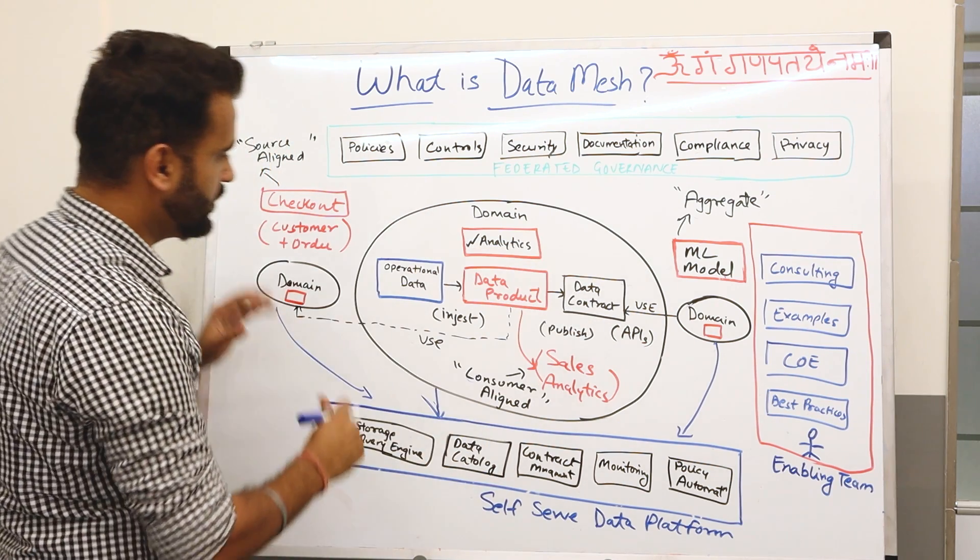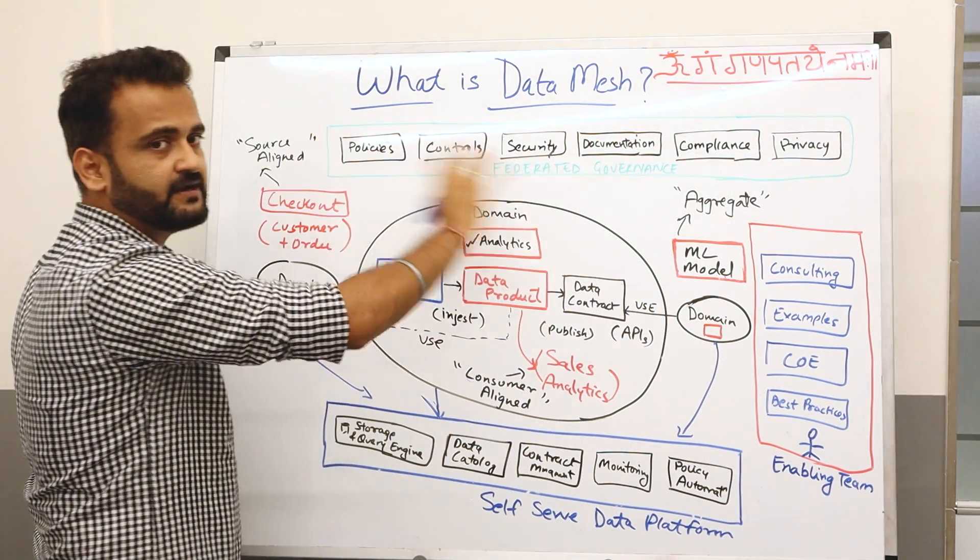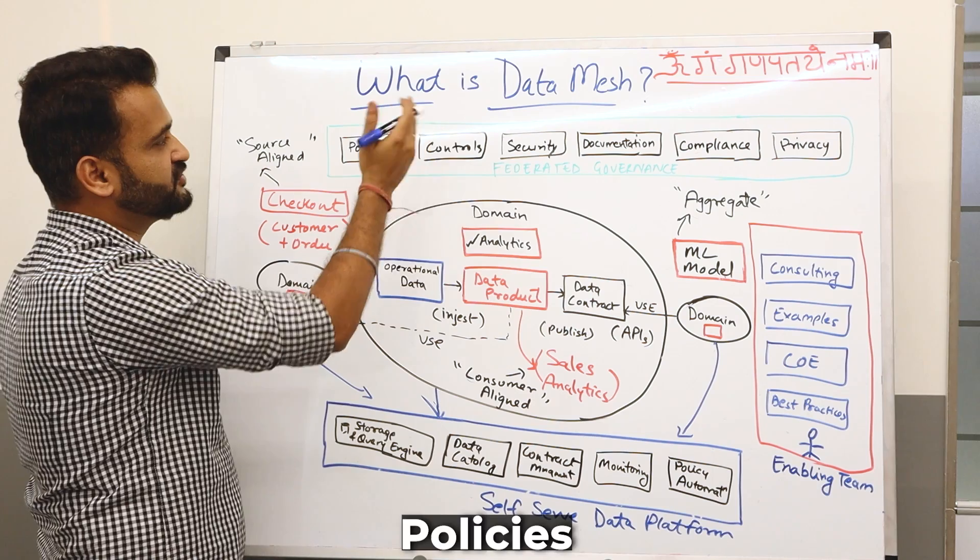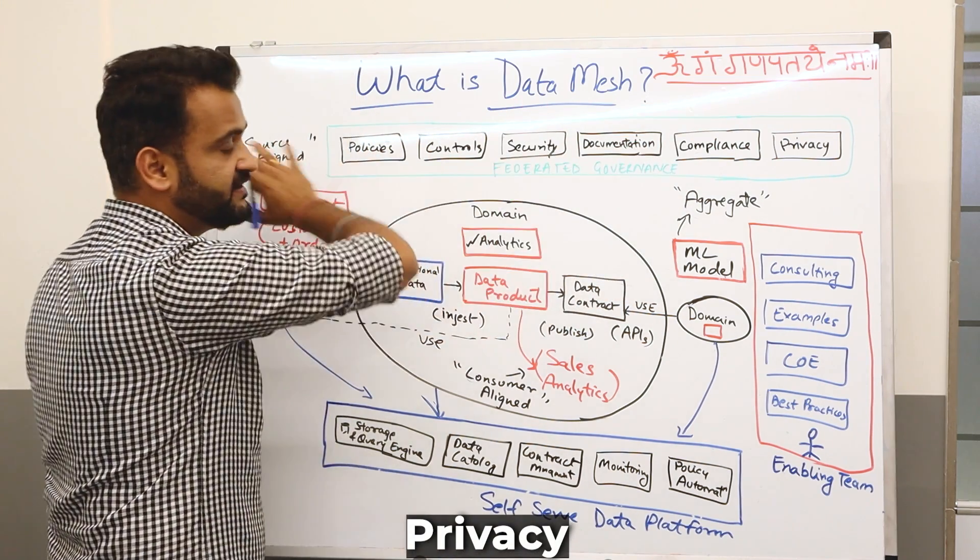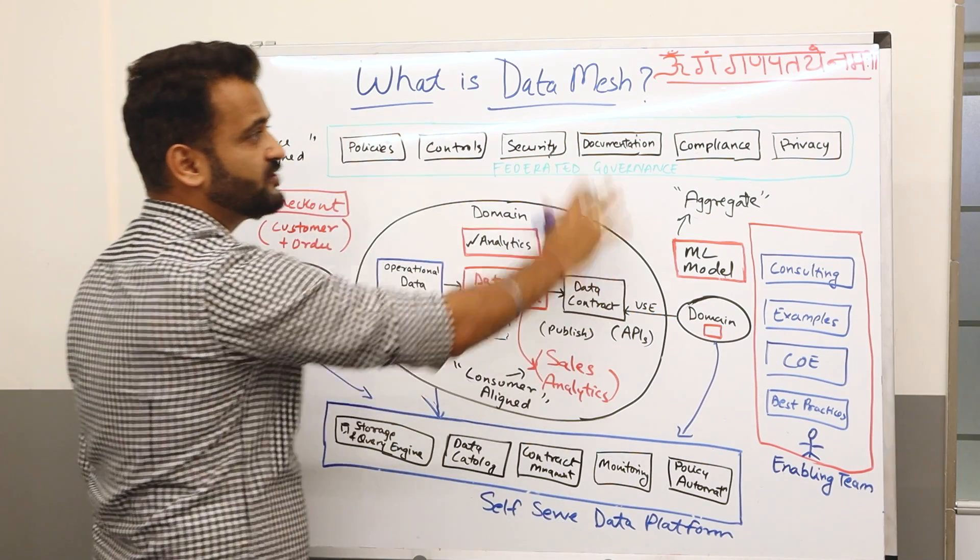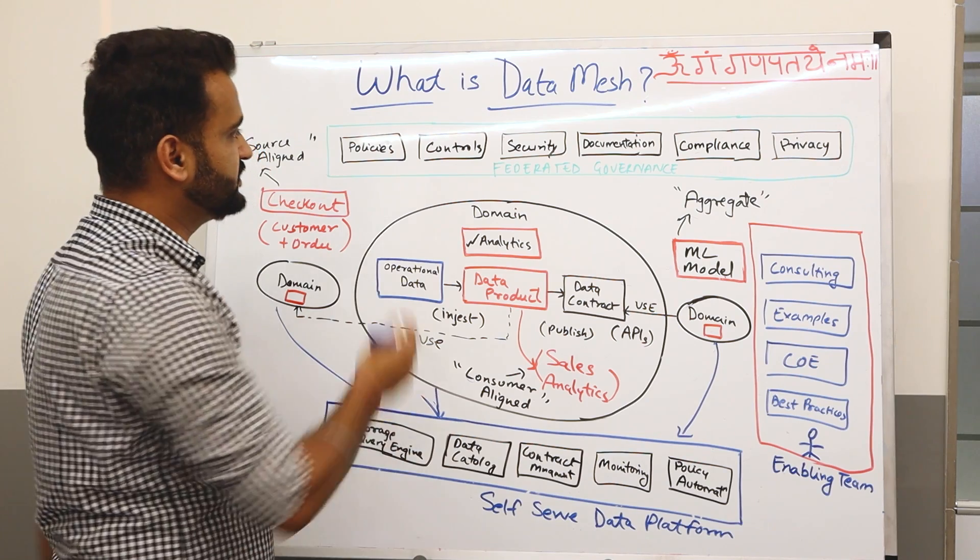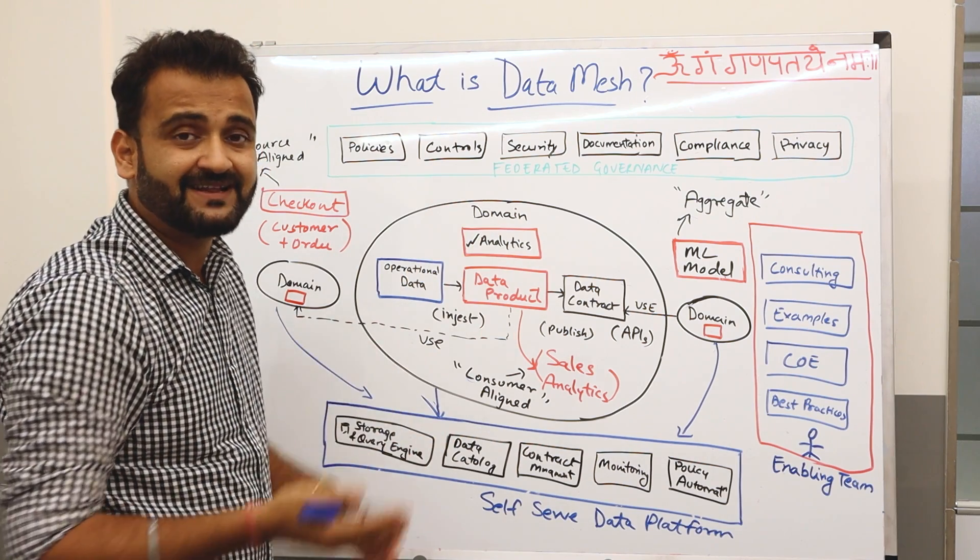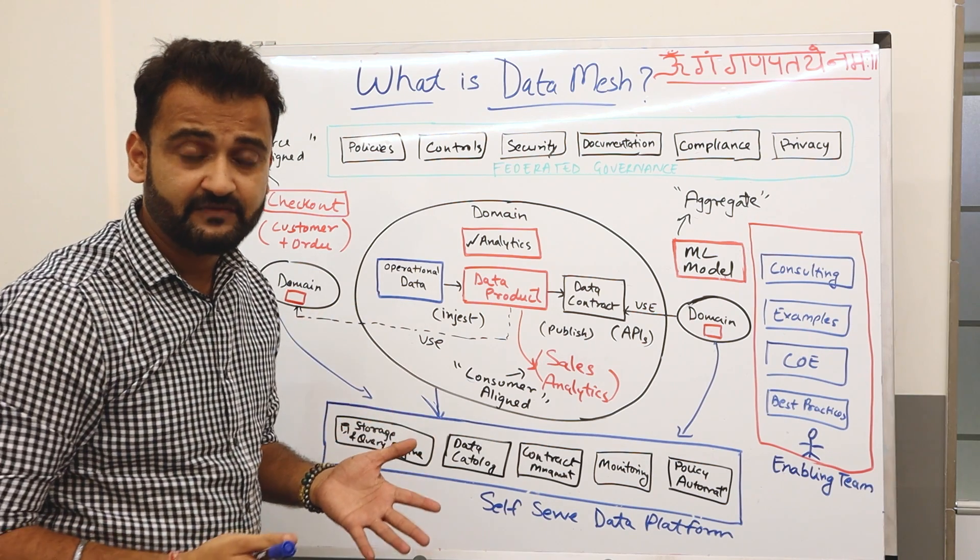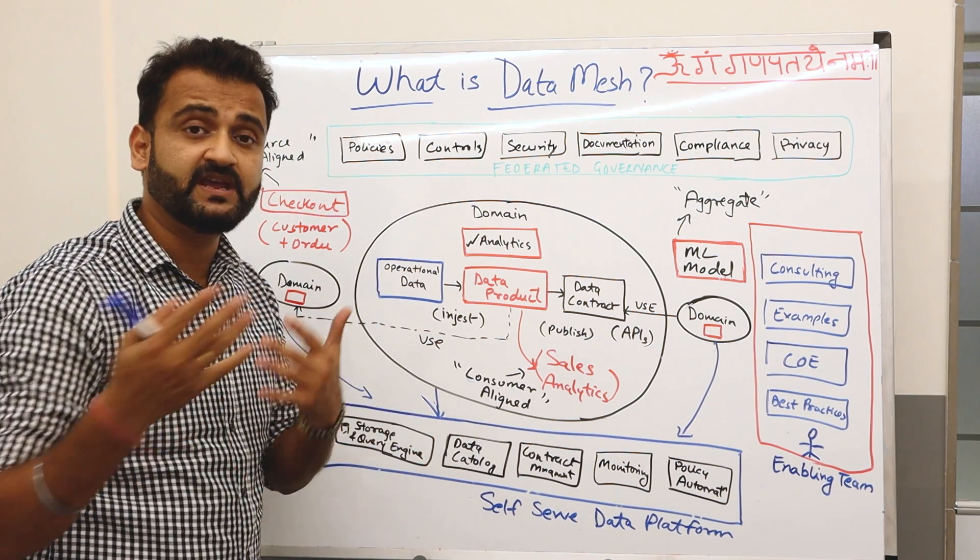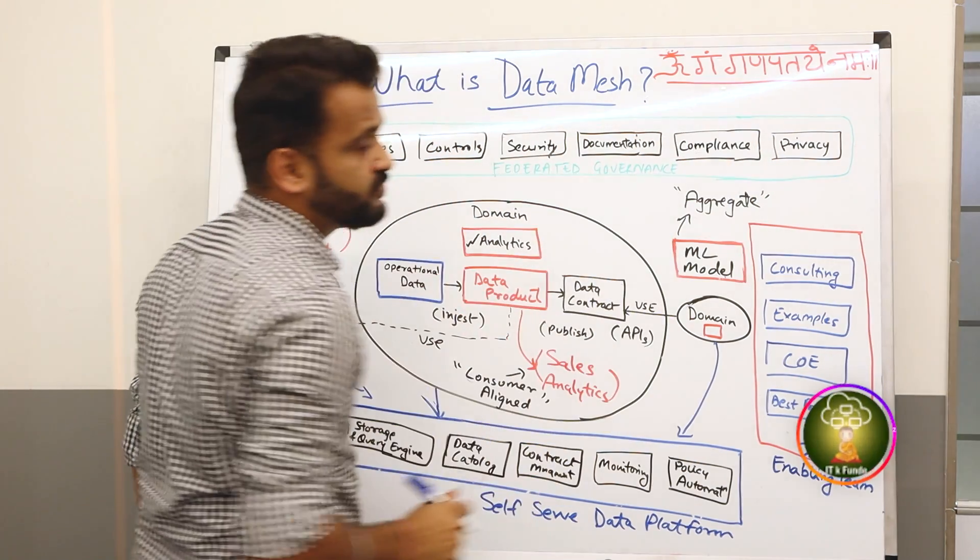So you understand this basic construct. On the governance, this will be a federated governance. All your policies, security controls, documentation, compliance, privacy—everything would be federated across. There would be representatives from all the domains sitting in this. And then for any request which comes in, they will have to validate whether it's a legitimate request, whether it should be allowed or not. There would be some PII data which is very personal data. There would be data which is non-compliant to GDPR. All that has to be controlled by this particular layer.